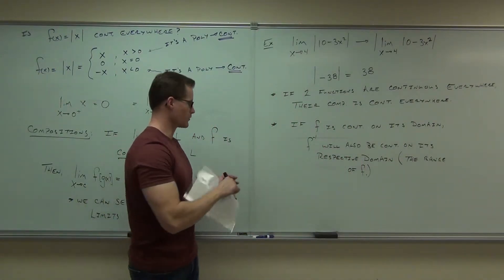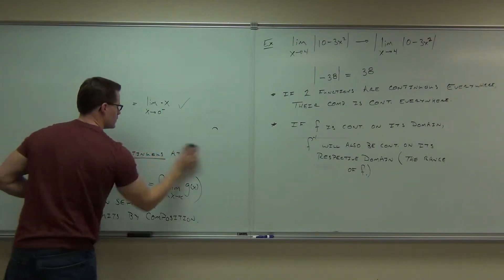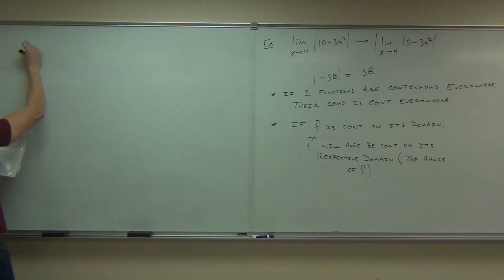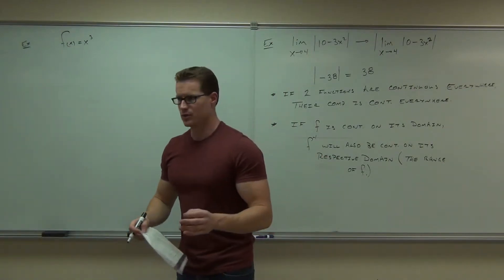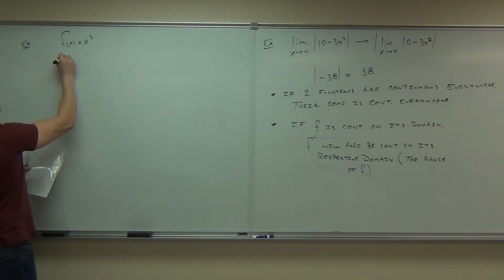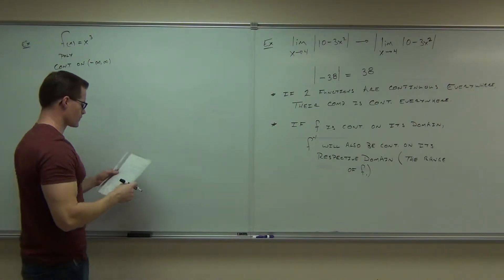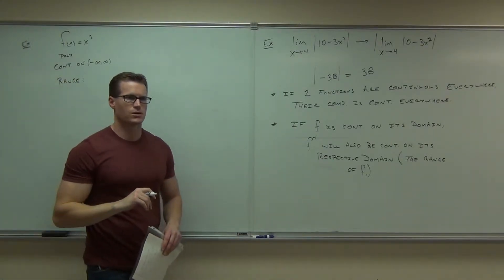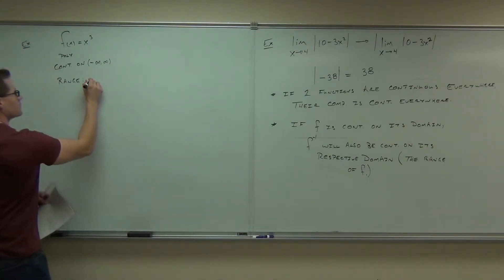In the last minute that we have, let me give you one quick example. Let's say F of X is X cubed. Is X cubed a polynomial? It also goes from negative infinity to infinity — all real numbers.